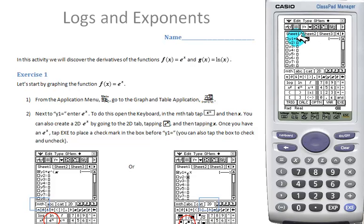We could also, instead, go to the 2D tab. Select the 2D e raised to a power. Choose x. And when we're done putting e to the x, we hit EXE.